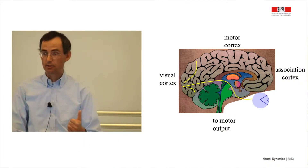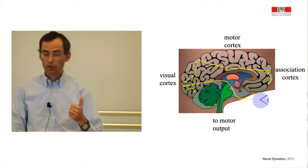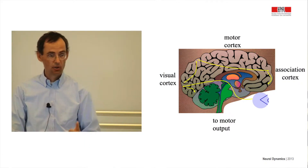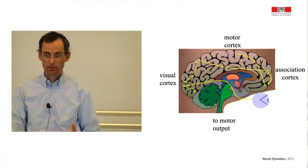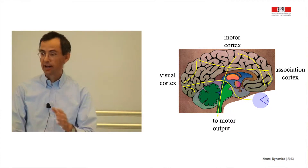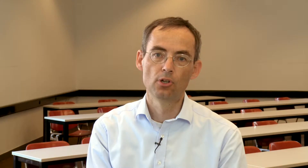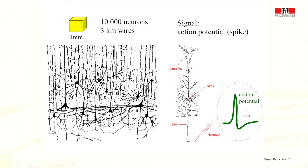This course is about the brain. The brain is made up of billions of cells, called neurons, which form an integrated network, where each neuron sends signals to thousands of other neurons.